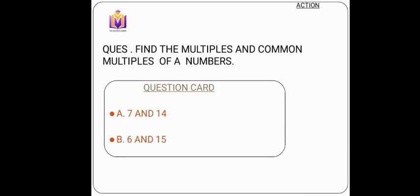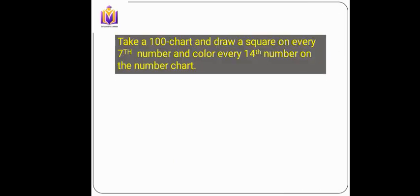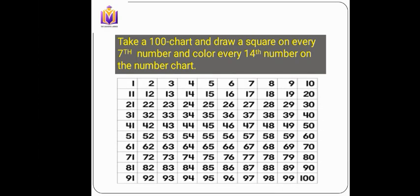Let's start. The question is: find the multiples and common multiples of the numbers. Two parts are given — the first is 7 and 14, and the other is 6 and 15. To work through these, first we need a hundred chart. We can take a printout or draw one. On this hundred chart, we have to draw a square on every seventh number.